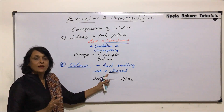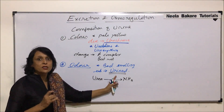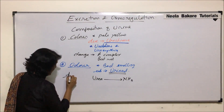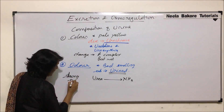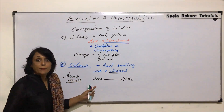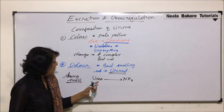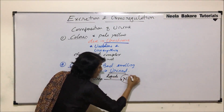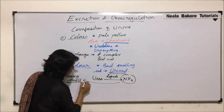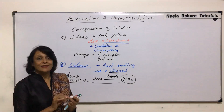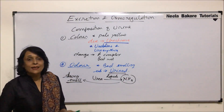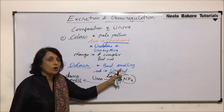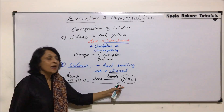Originally, fresh urine has a bad smell because of urinoid — it is not that pungent. But very soon a strong smell appears, and that is because of urea degrading into ammonia. This ammonia is responsible for the strong smell that urine has in a normal situation.